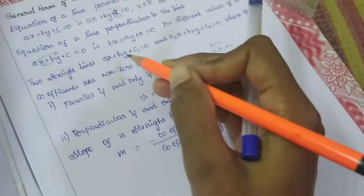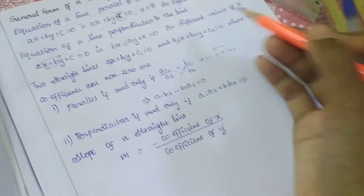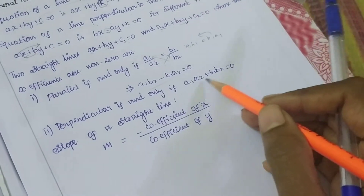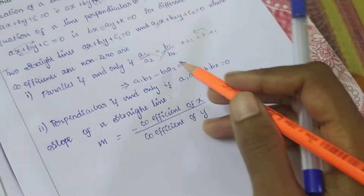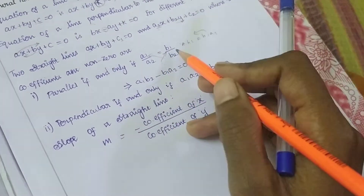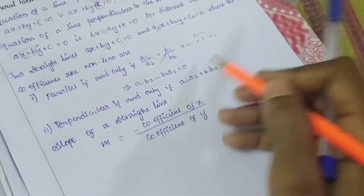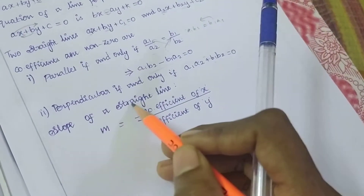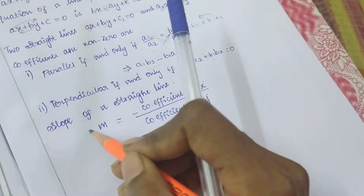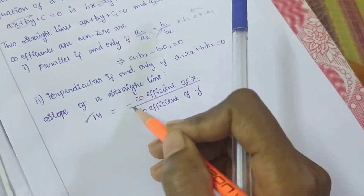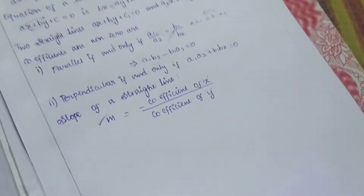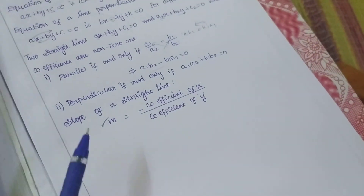For perpendicular lines, the condition is a1·a2 + b1·b2 = 0. Multiply and solve to get this equation. The slope of a straight line is: m equals minus coefficient of x divided by coefficient of y.